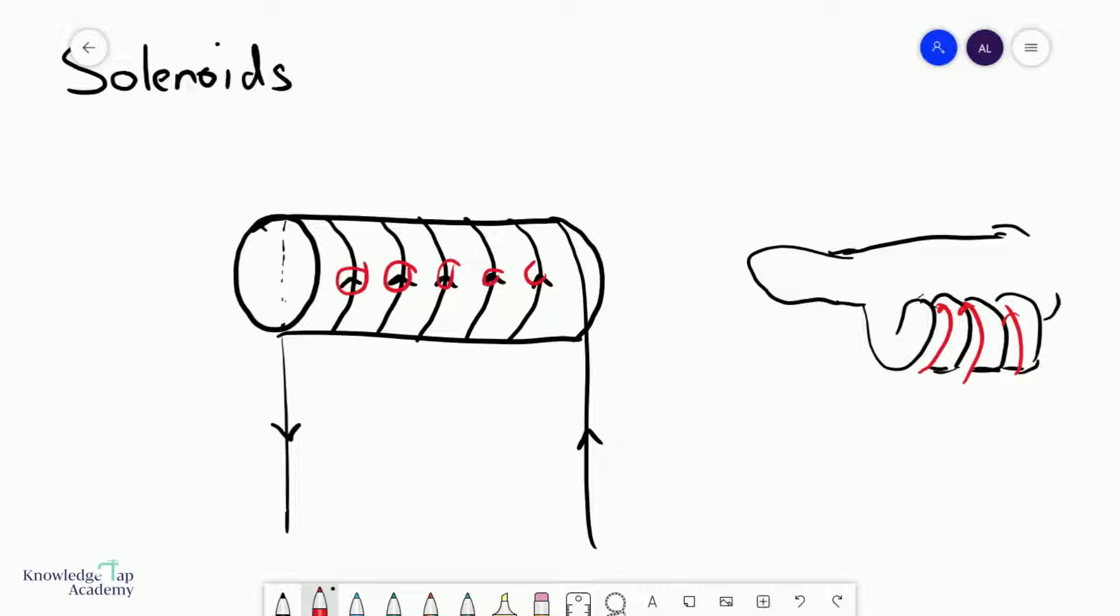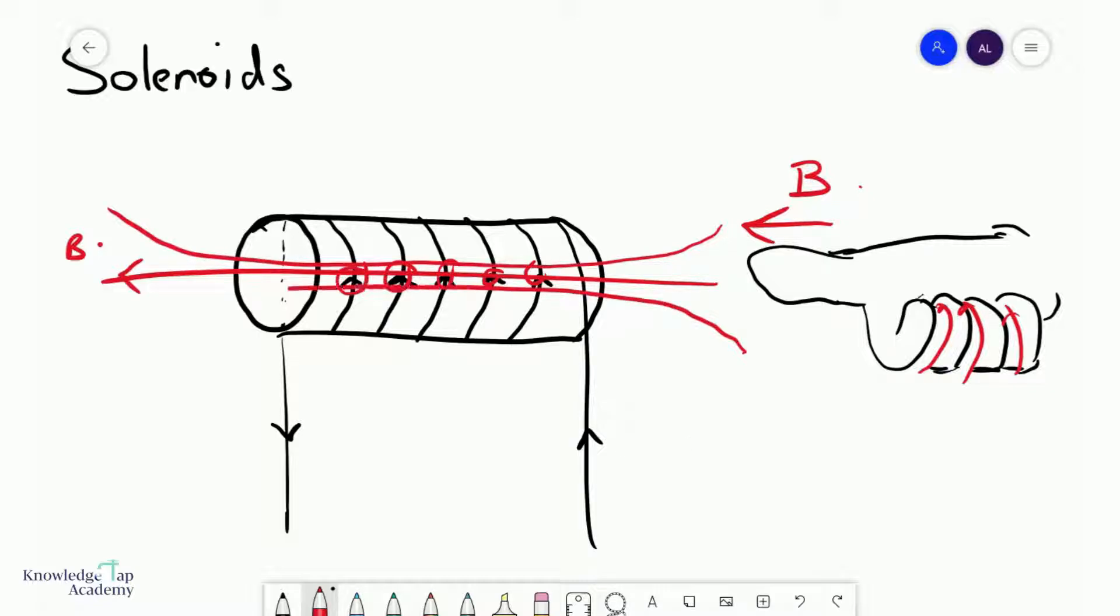So in this case your four fingers should be pointing upwards in front of you and you notice that your thumb is pointing to the left. And this will always indicate the direction of the magnetic field through the solenoid. And so there you go, there it is. And remember what happens around the solenoid is that you'll get all these other magnetic fields coming in like so.